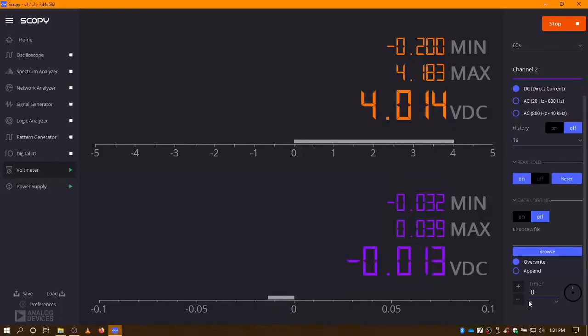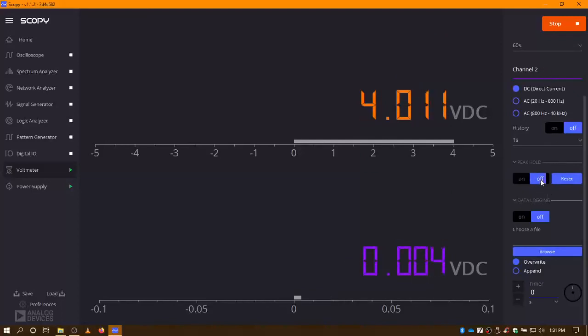You also have a choice of doing data logging. So, if you want to take a repetitive series of readings and save them to a file, you can. And, you can set it for how long you want to take the data. 10 seconds, 100 seconds, so on and so forth. Right now, I'm going to turn peak hold off.